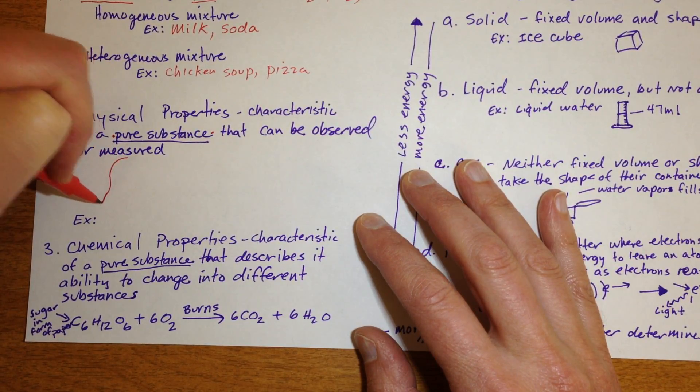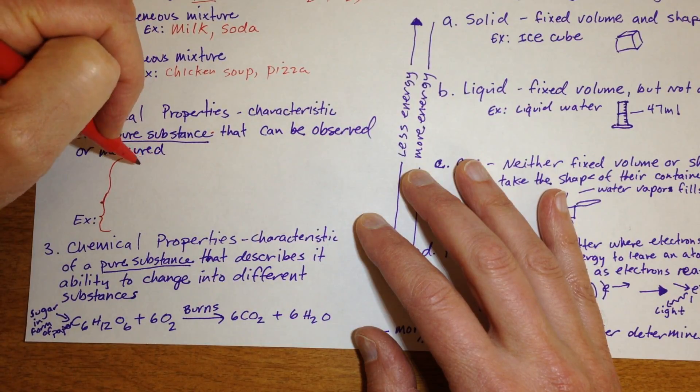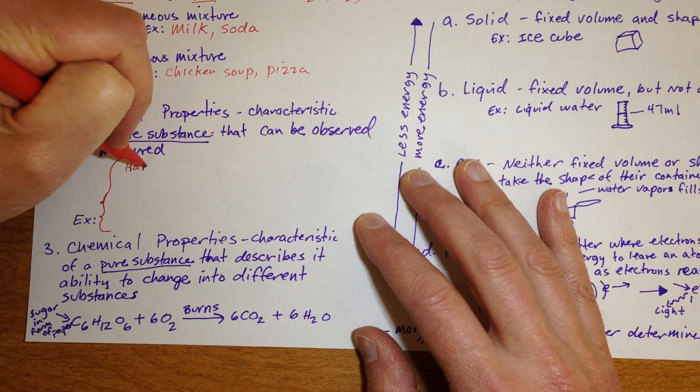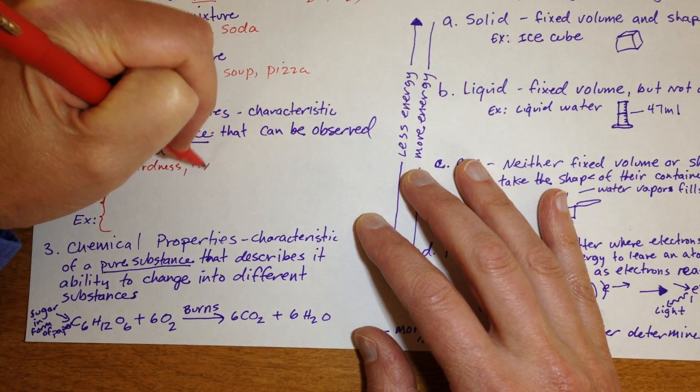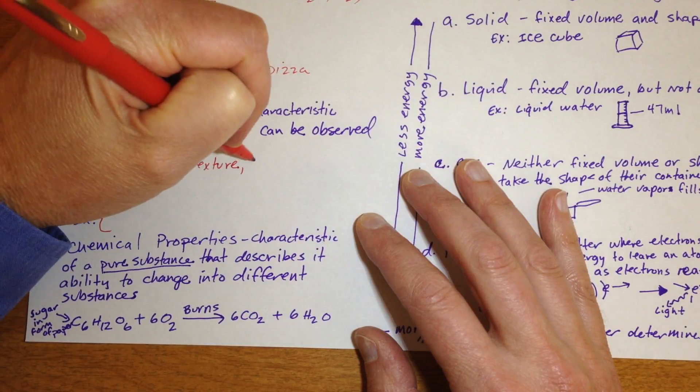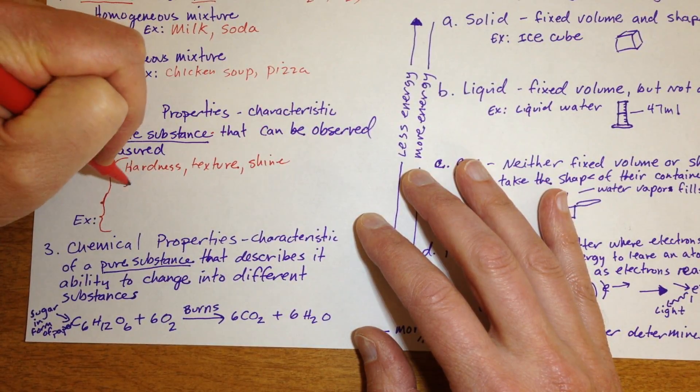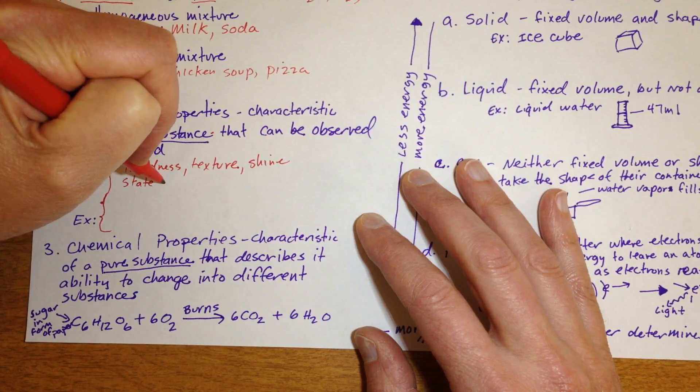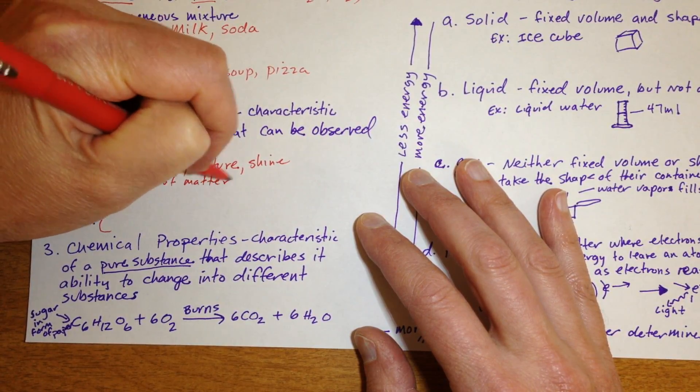And so a bunch of examples of physical properties would be the hardness of the substance, the texture, is it soft, smooth, rough, does it have a shine, the state of matter that it's in, which we'll talk about in just a second.